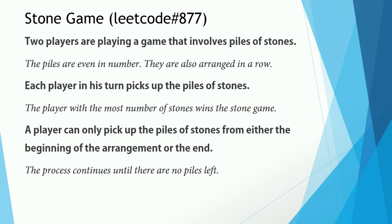Two players play a game with piles of stones. The piles of stones are even in number and are arranged in a row. Each player takes turns and picks up the piles of stones in his turn. The player with the most number of stones wins. Any player can either pick up a pile of stones from the start of the arrangement or from the end of the arrangement. In this way, the players pick up the stones until there are none left.